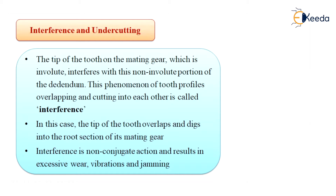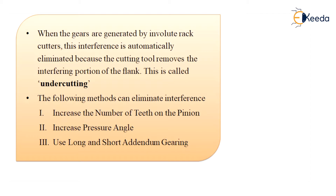In this case, the tip of the tooth overlaps and digs into the root section of its mating gear. Interference is non-conjugate action and results in excessive wear, vibration, and jamming. When gears are generated by involute rack cutters, this interference is automatically eliminated because the cutting tool removes the interfering portion of the flank — this is called undercutting. Undercutting solves the problem of interference; however, an undercut tooth is considerably weaker.